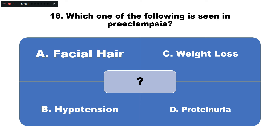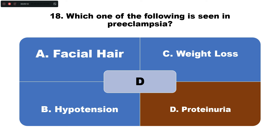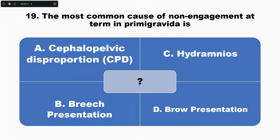Question number eighteen: Which of the following is seen in pre-eclampsia? Option A: facial hair, B: hypotension, C: weight loss, D: proteinuria. The correct answer is option D — proteinuria is the main characteristic feature seen in pre-eclampsia.